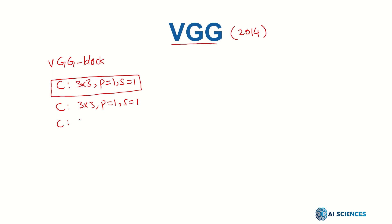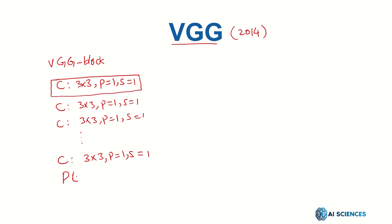We can then have another convolutional layer, again three by three with padding one and stride one, and another, and we may have several convolutional layers in succession each with the same kind of parameters. After a few convolutions — however many are in a block, which varies — they apply a max pool layer, which is a two by two max pool with stride equal to two.